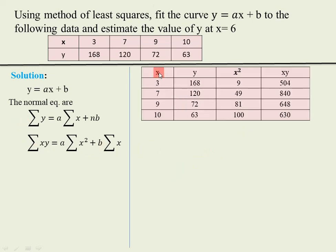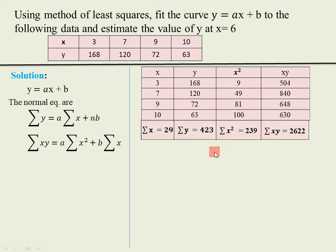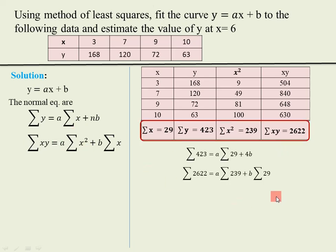We prepare a table having columns for x values, y values, x squared, and xy values. Then we obtain the summation of these values. Once we get these summations, we put the summation values into the normal equations and solve the equations to obtain the values of a and b.